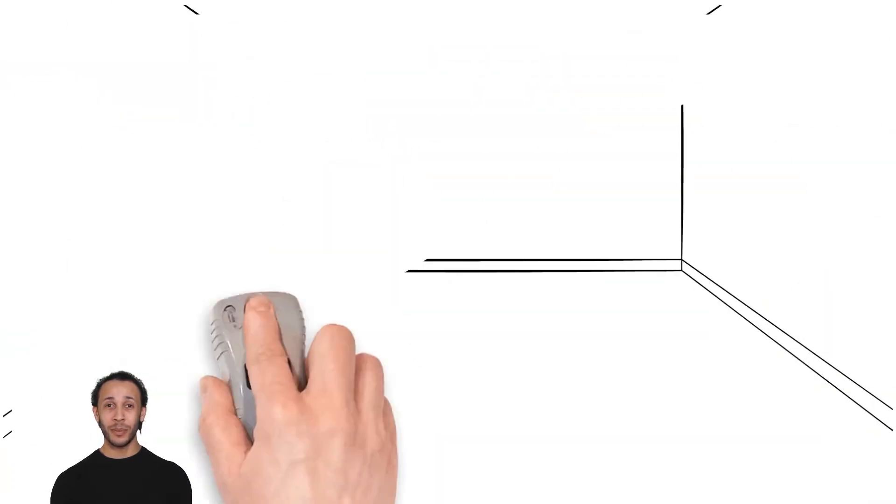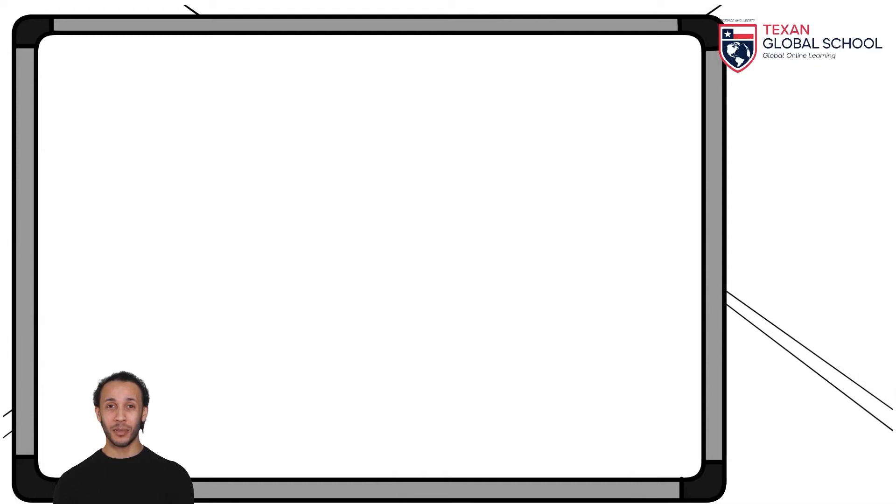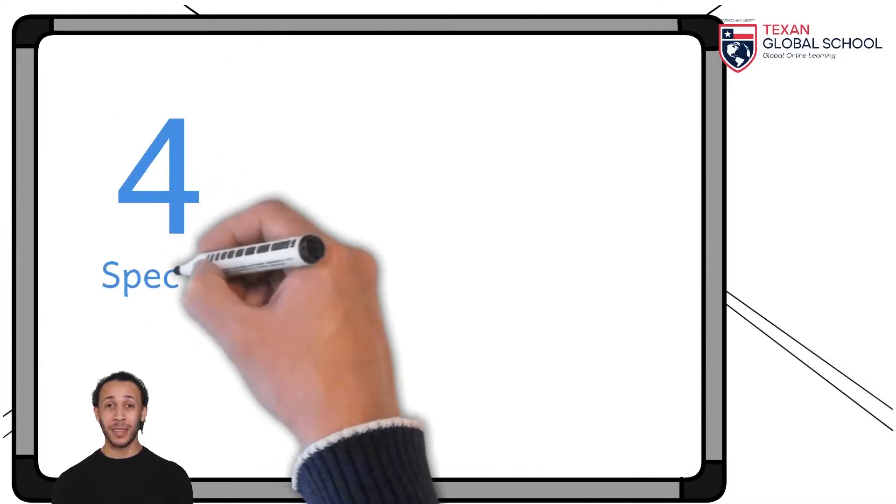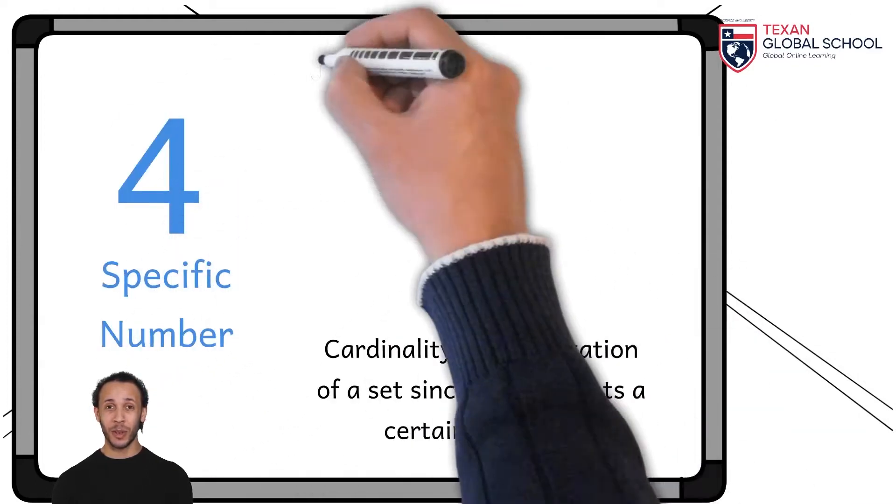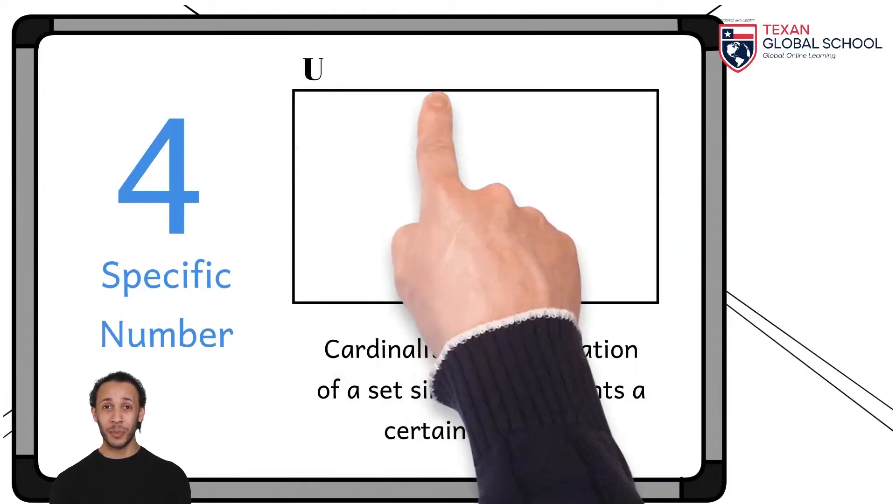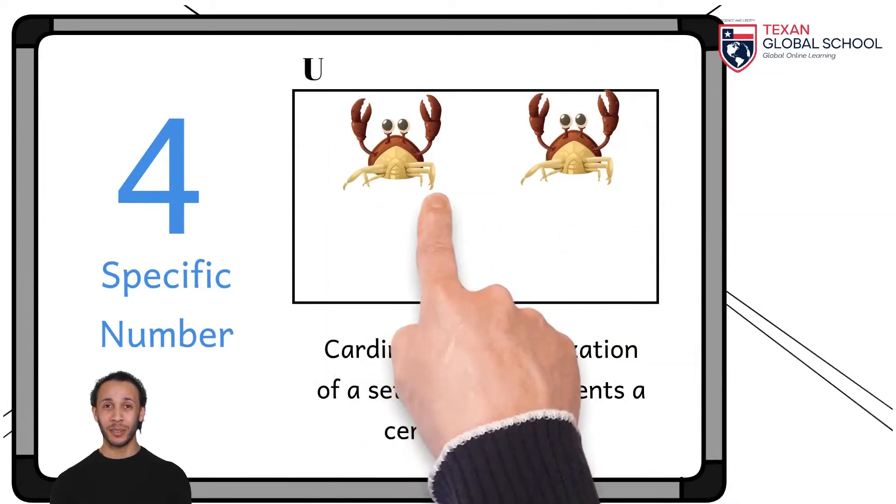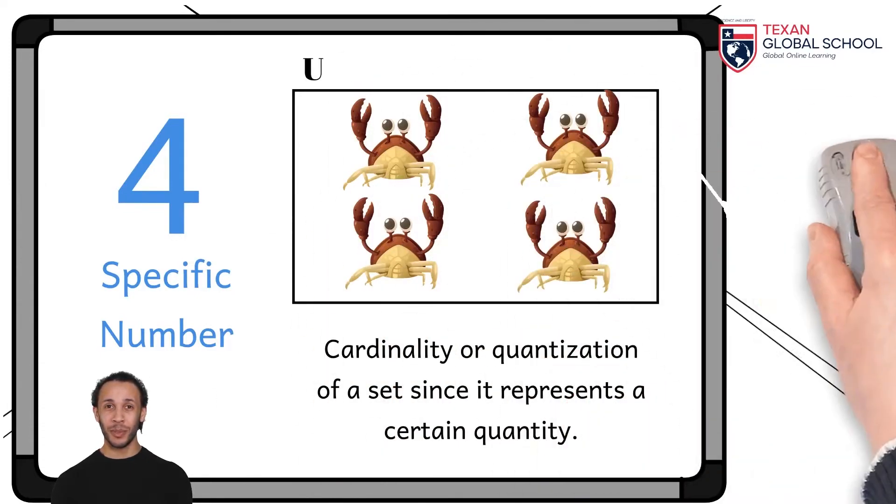For example, 4 is a specific number that expresses a fixed quantity in a set. This is called cardinality or quantization of a set because it represents a certain quantity. Each symbol in arithmetic represents only one quantity.